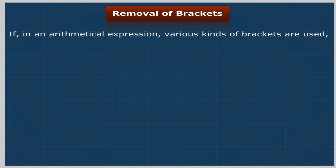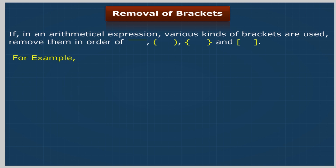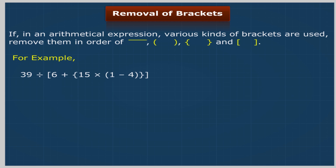If in an arithmetical expression various kinds of brackets are used, remove them in order. For example, 39 ÷ [6 + {15 × (1 − 4)}] is equal to 39 ÷ [6 + {15 × (1 − 3)}] is equal to 39 ÷ [6 − 4].